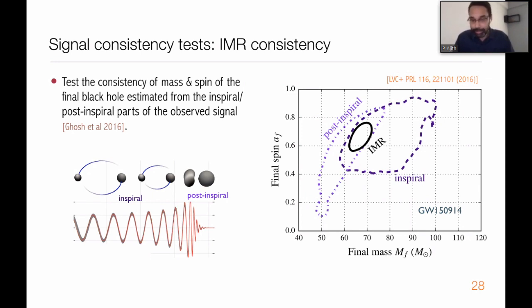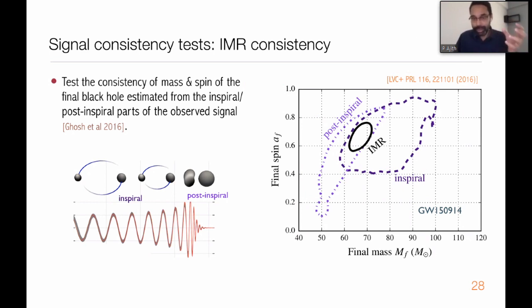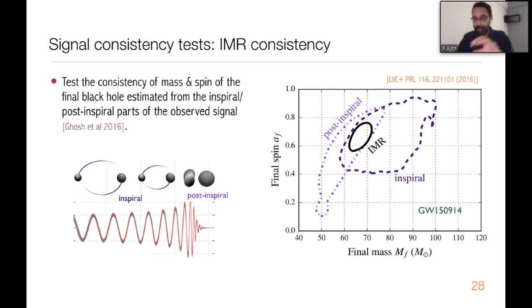This plot shows the mass and spin of the remnant black hole, with 90% confidence contours of the posterior probability. The estimate from the inspiral part is shown by the legend 'inspiral,' and we can independently look at the post-merger part to make the same estimate. If all our ingredients - Einstein's theory, simulations, and data analysis - are consistent, these two independent estimates must be consistent with each other and have an overlapping region. And this is indeed what we see. So again, we see no inconsistency of the data with the prediction of GR.